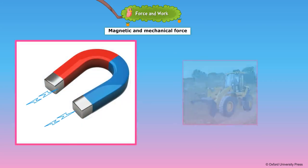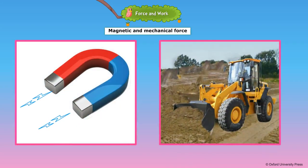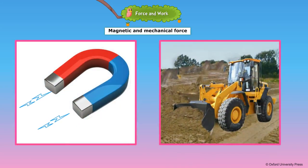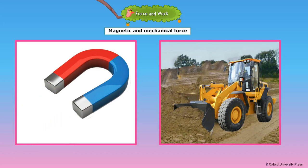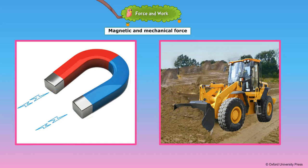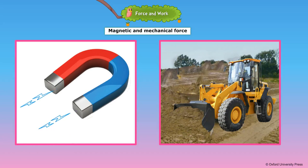Magnets have the power of attracting certain metals towards themselves. The force exerted by a magnet is called magnetic force. When a bulldozer pushes earth or a tractor pulls a trailer, it is called mechanical force.